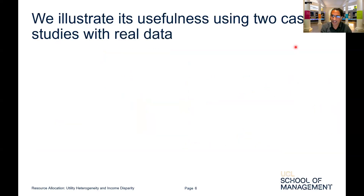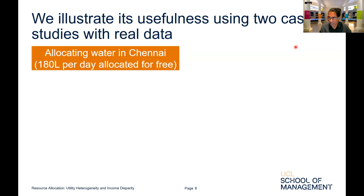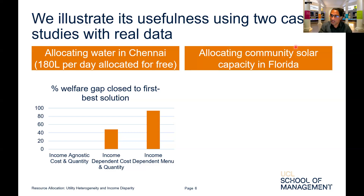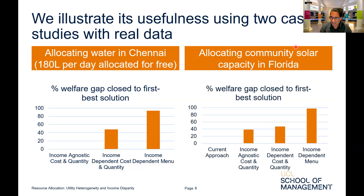That was a theoretical illustrative example, but we demonstrate the usefulness of our income-dependent menu approach using two case studies with real data. The first is allocating water in Chennai, comparing schemes that allocate 180 liters of water for free. Relative to a simple approach that does not account for income information — similar to what they currently do — our income-dependent menu approach closes over 90% of the gap to the theoretical first-best. In an entirely different problem, allocating community solar capacity in Florida, we similarly close over 90% of the gap to the first-best.